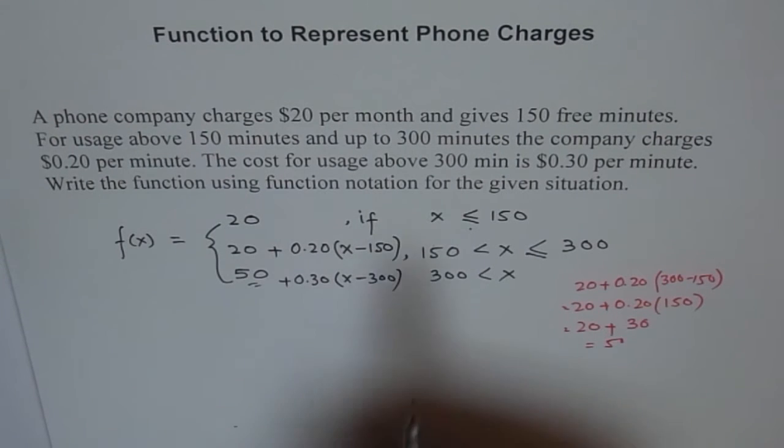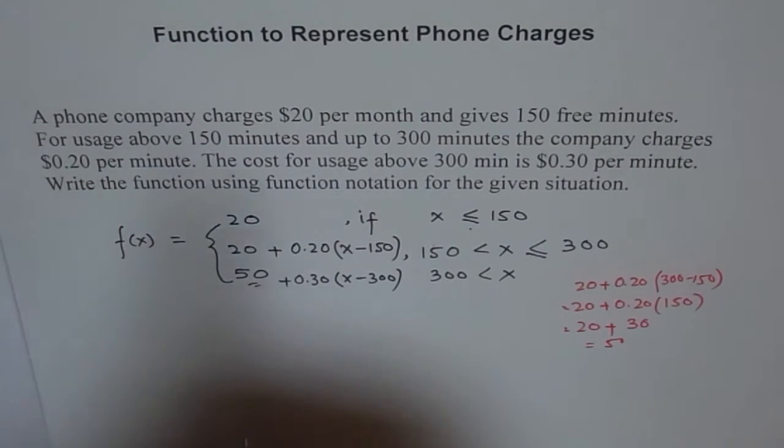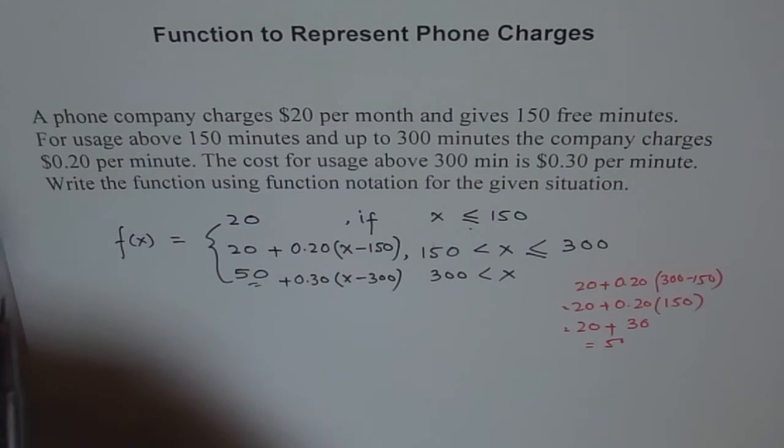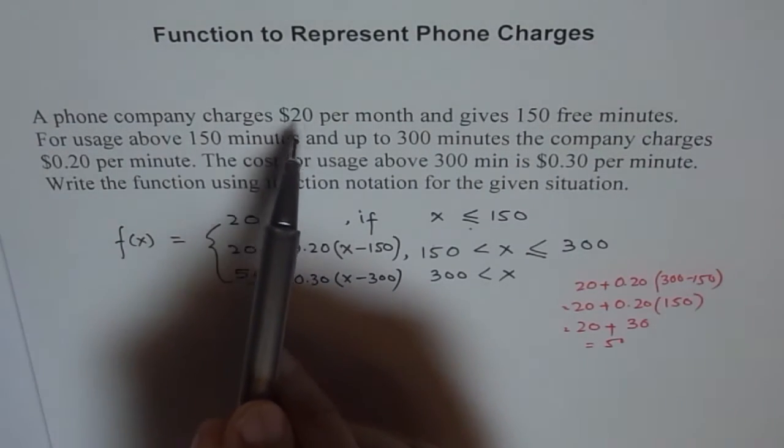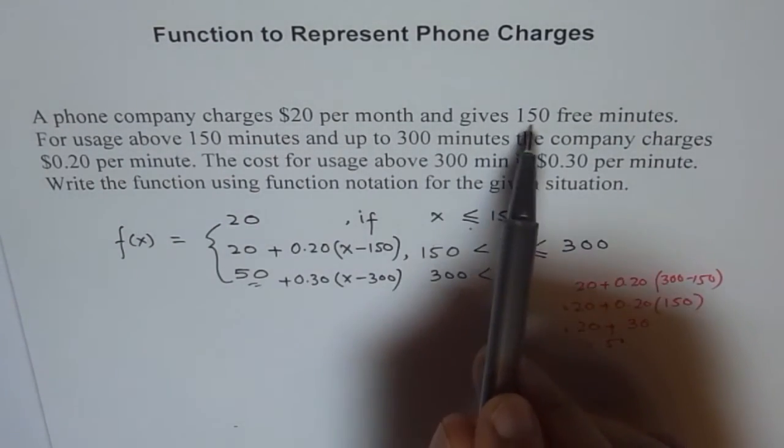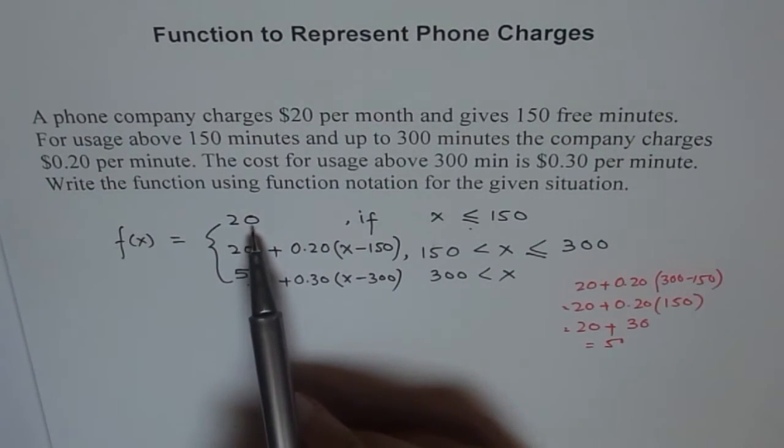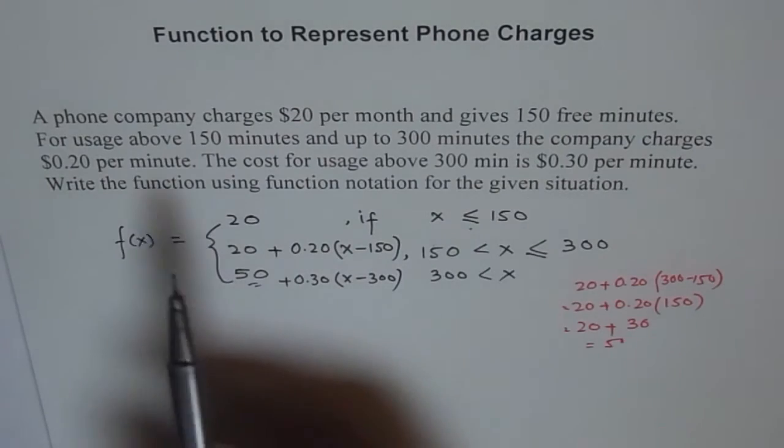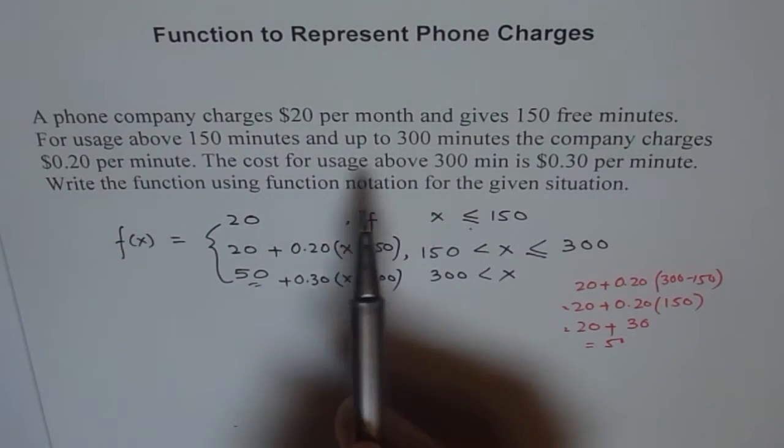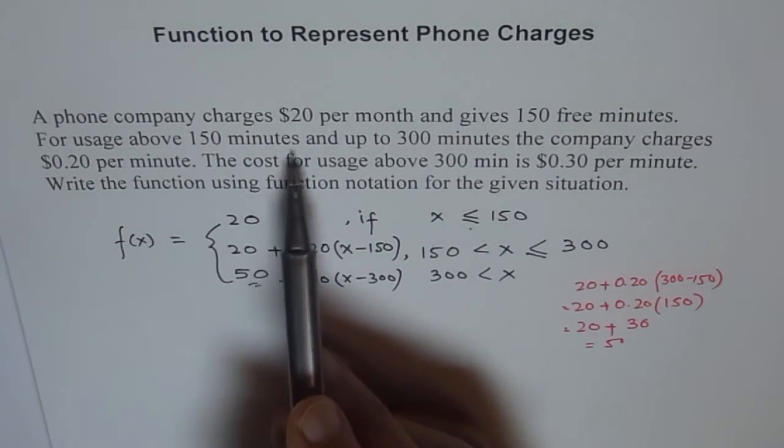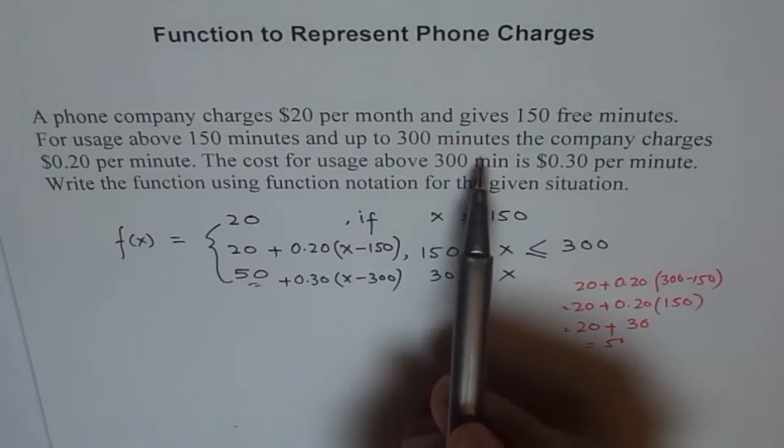So this is a very tricky problem. That is the reason why I have taken it here. And let us go through the question once again to understand how it is being developed. A phone company charges $20 per month and gives 150 free minutes. That is 150 minutes and $20 cost. Perfect, it matches.